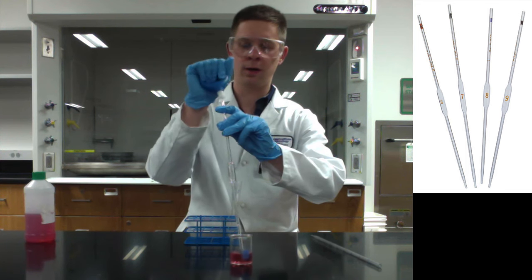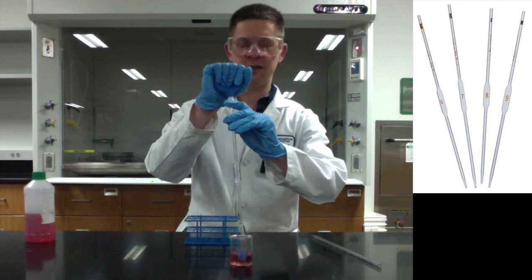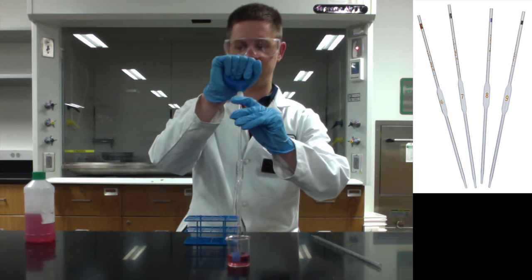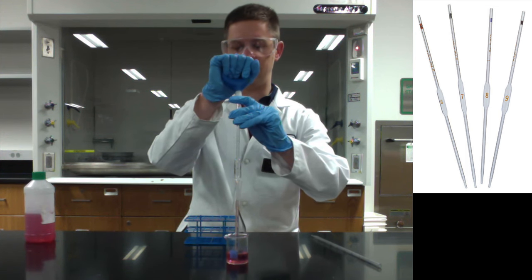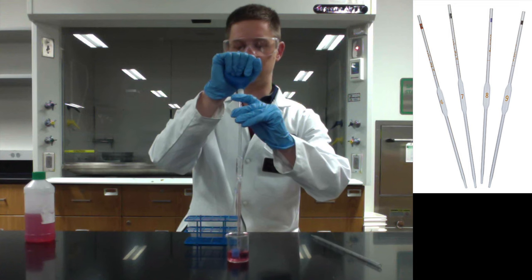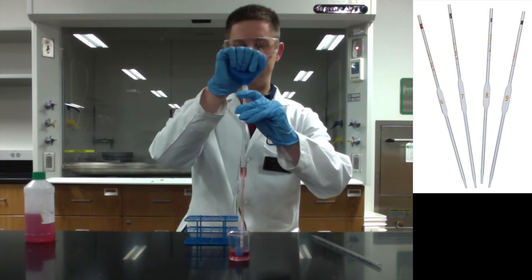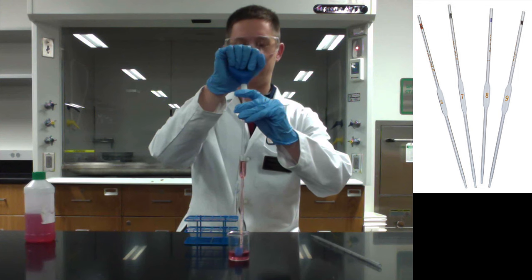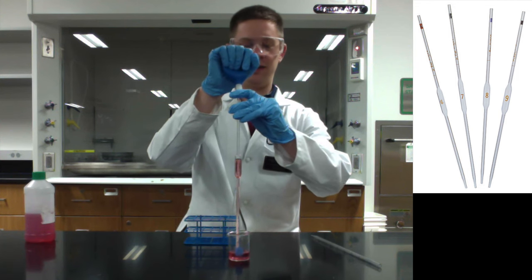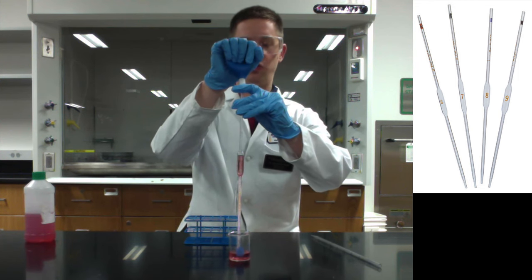So squeeze it first, place it there to seal it. It doesn't have to be super tight. You just need a good enough seal to get suction, and then start to release your grip, and you'll notice the liquid coming up the pipette and filling that bulb-like area. That bulb was precision crafted so that when you fill to the line, you'll end up with 10 milliliters of liquid.